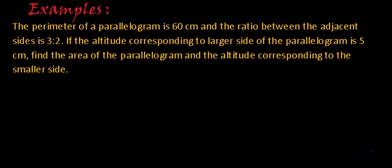Hi, so we have one more example. Let's read the statement. The perimeter of a parallelogram is 60 centimeters and the ratio between the adjacent sides is 3 to 2. If the altitude corresponding to the larger side of the parallelogram is 5 centimeters, find the area of the parallelogram and the altitude corresponding to the smaller side.